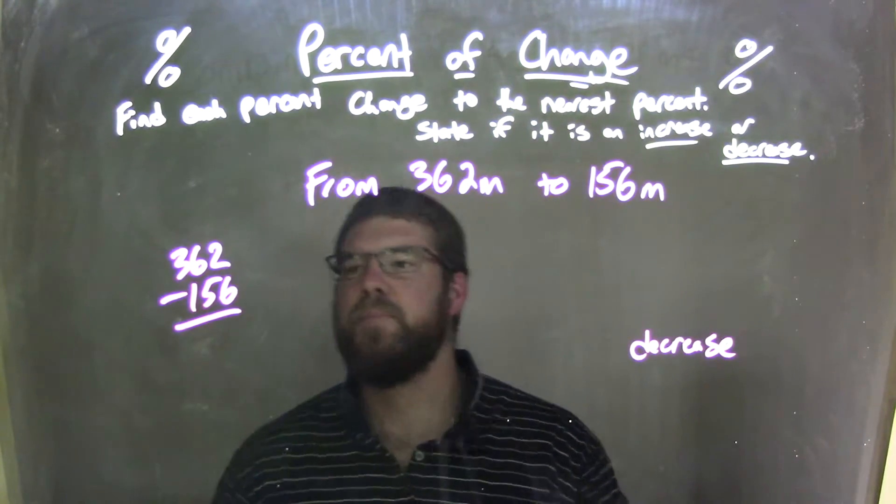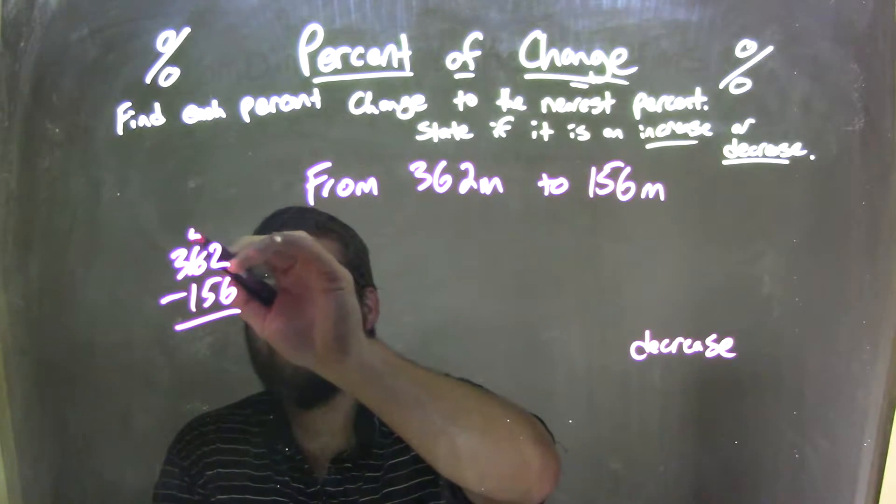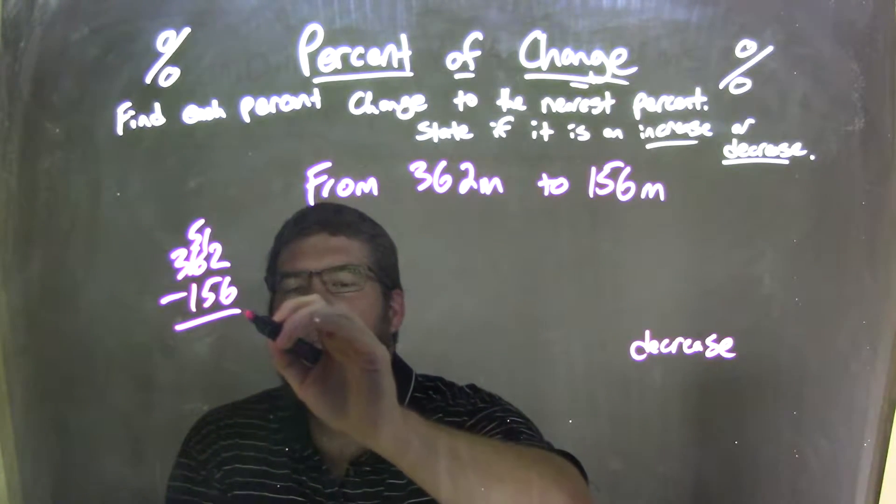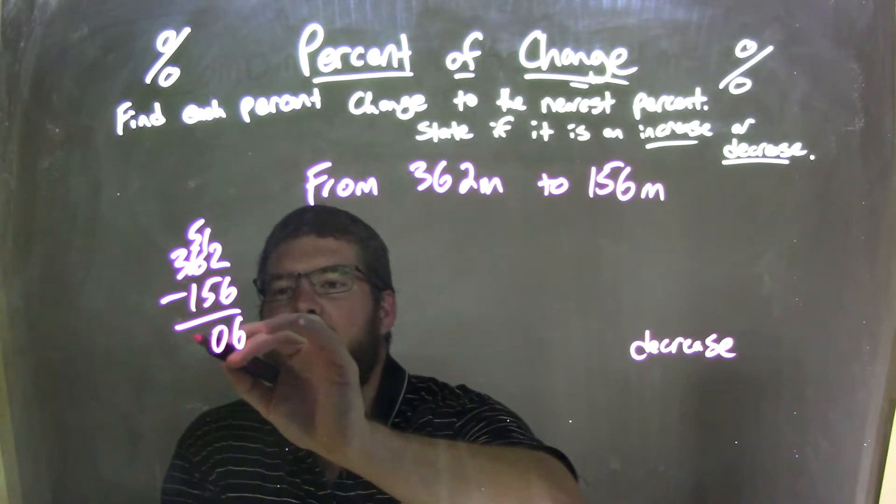Let's just subtract these two. Using the traditional method, that should be a 5, this is a 12, 12 minus 6 is 6, 5 minus 5 is 0, and 3 minus 1 is 2.